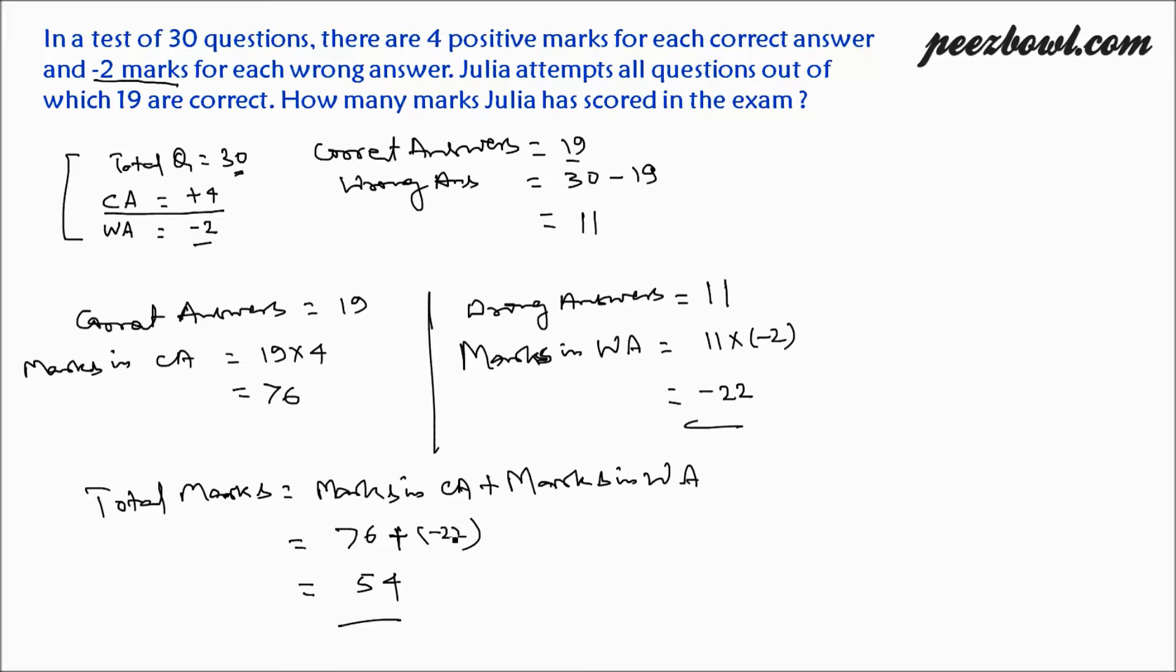Because when we add a negative integer, we need to move right on the number line as per the number line rule. So 76 plus minus 22 is 76 minus 22, which is 54. This is the total score Julia has got in her exam. Thank you for watching.